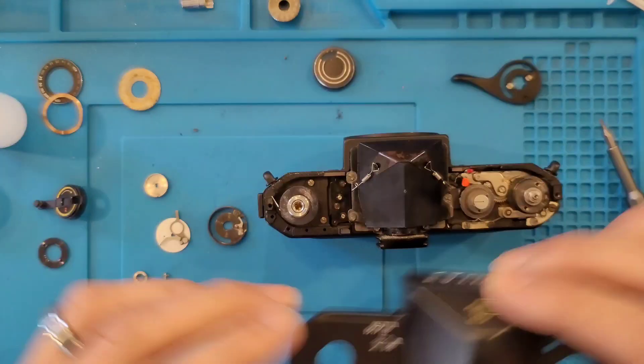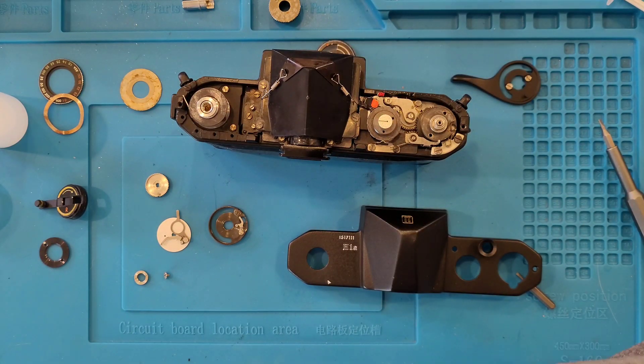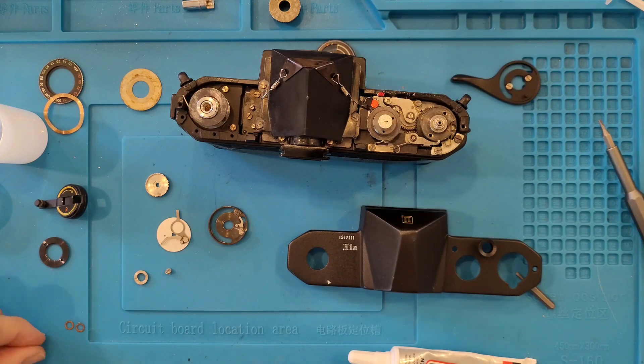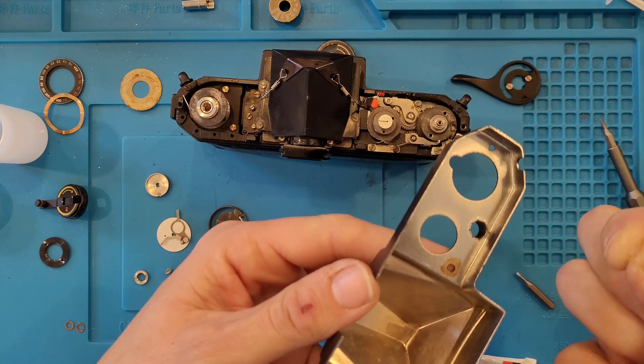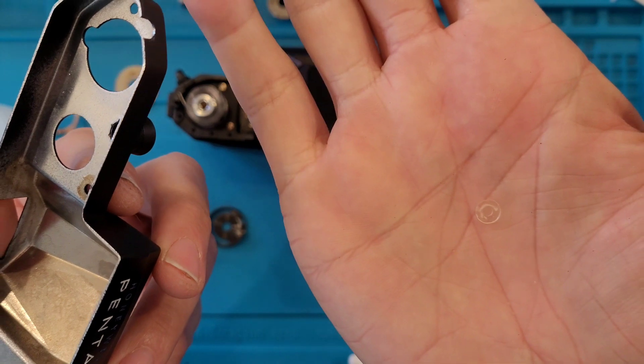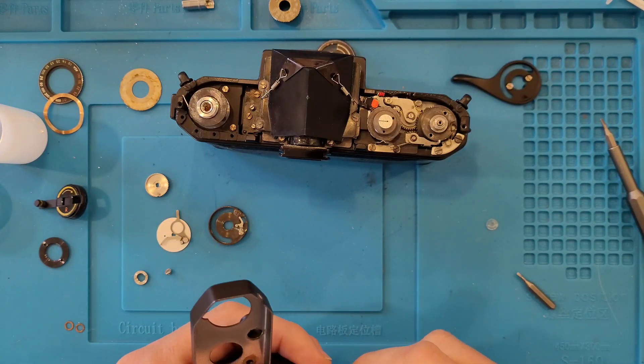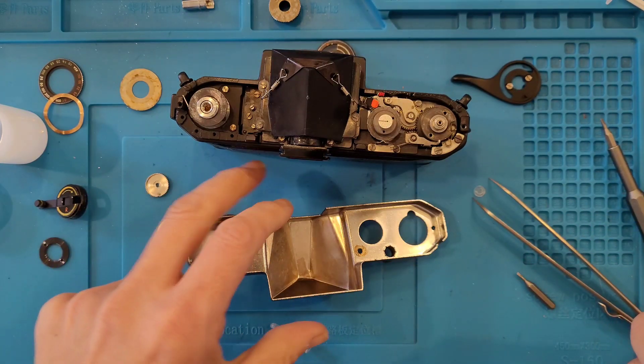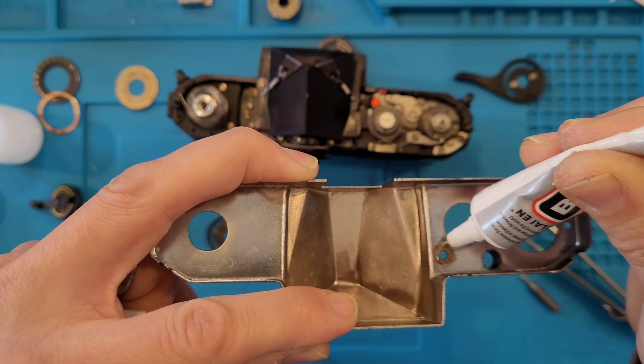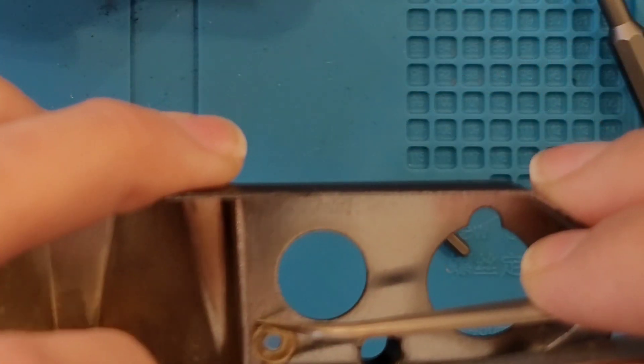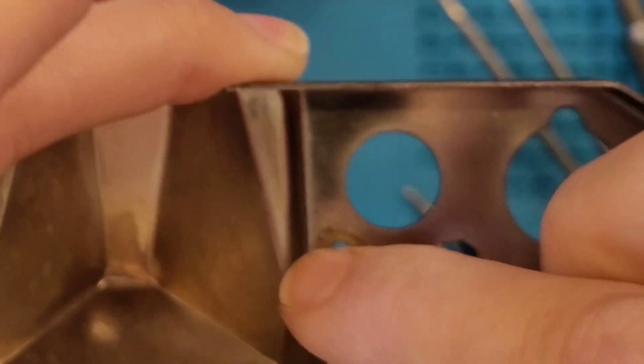The little window for this, I still got to re-glue that. It goes right here and gets glued in place. It's just an itty bitty lens, just keeps dust out. A little bit of adhesive, press it into place. There we go.